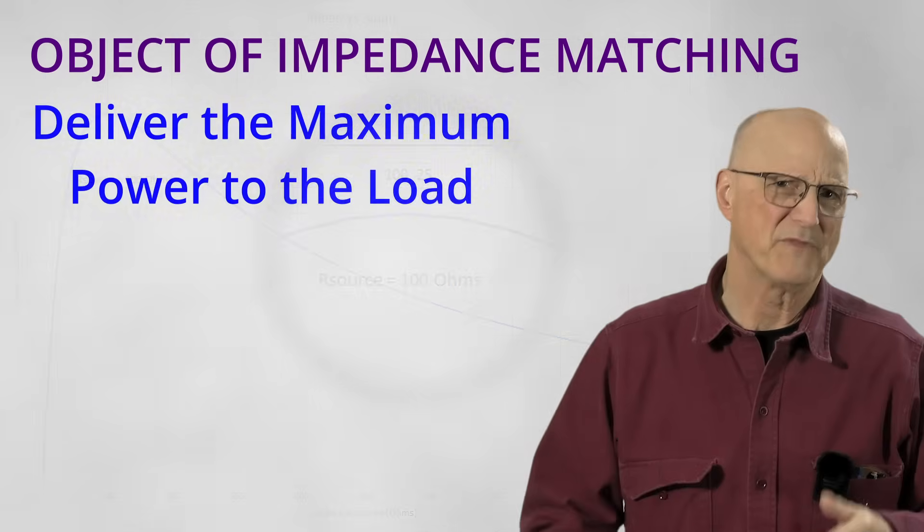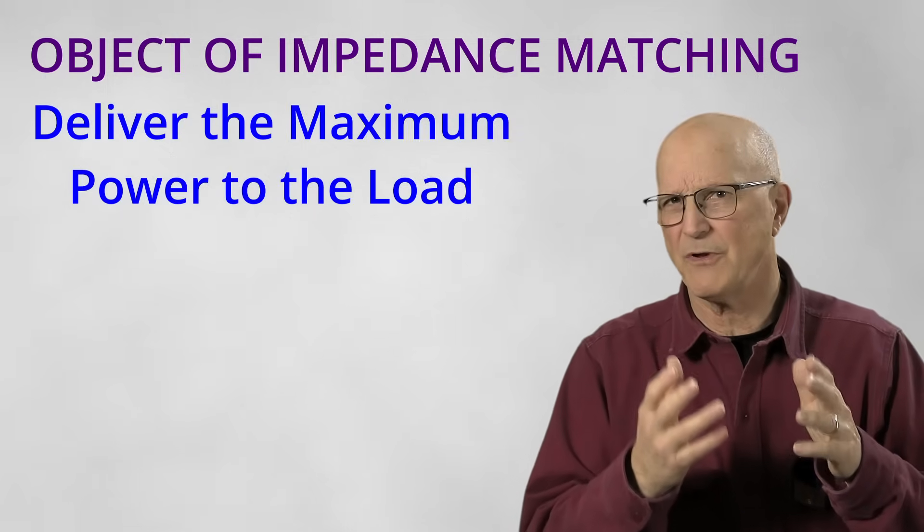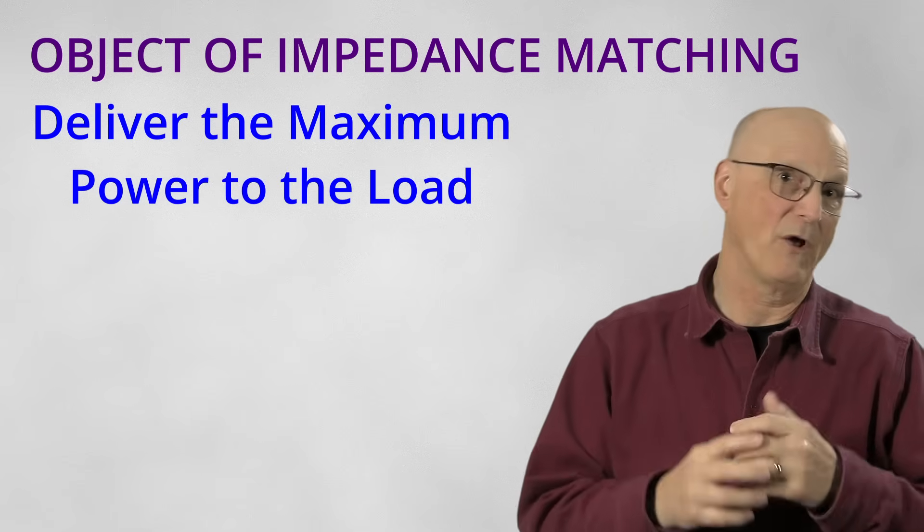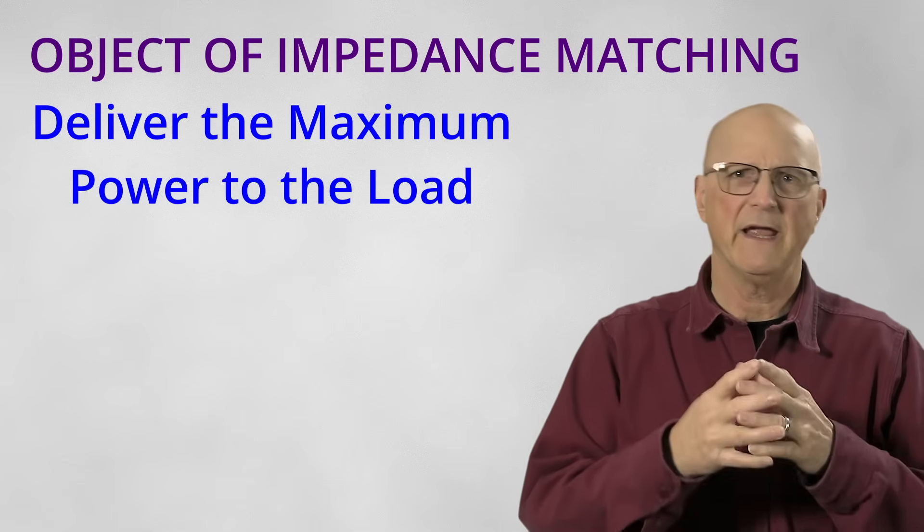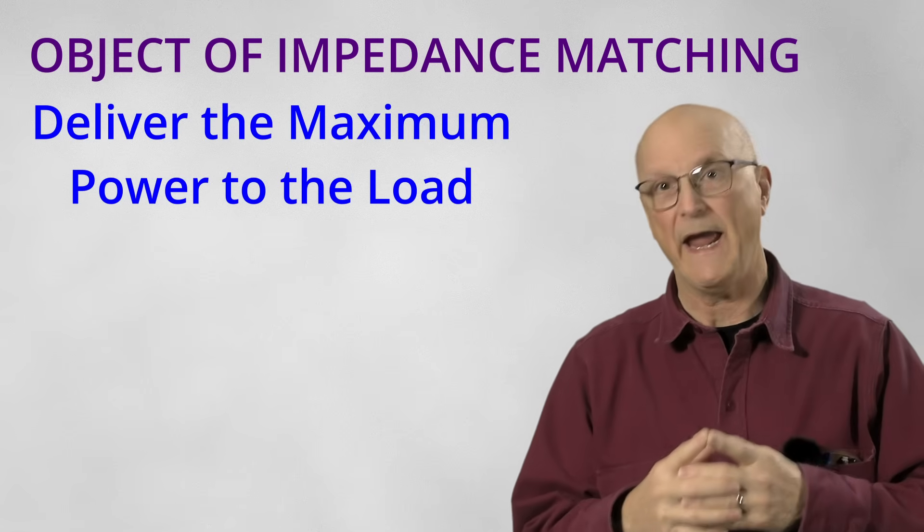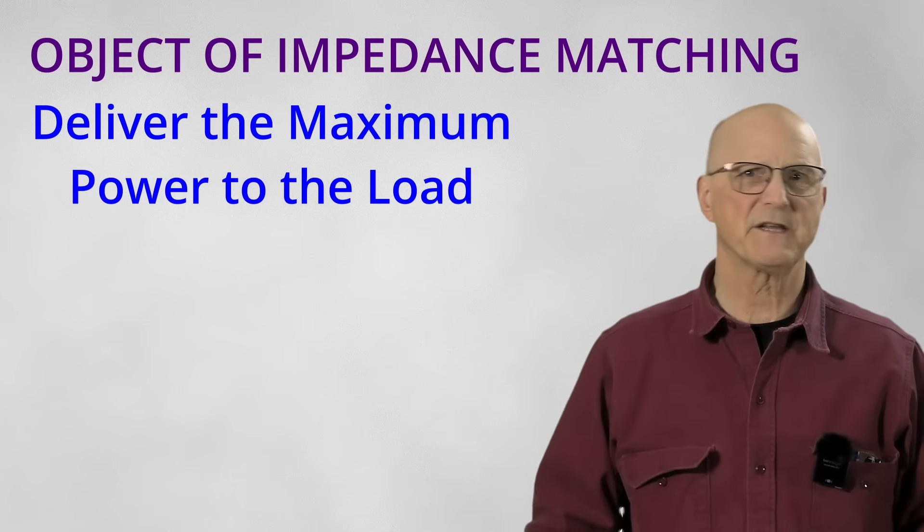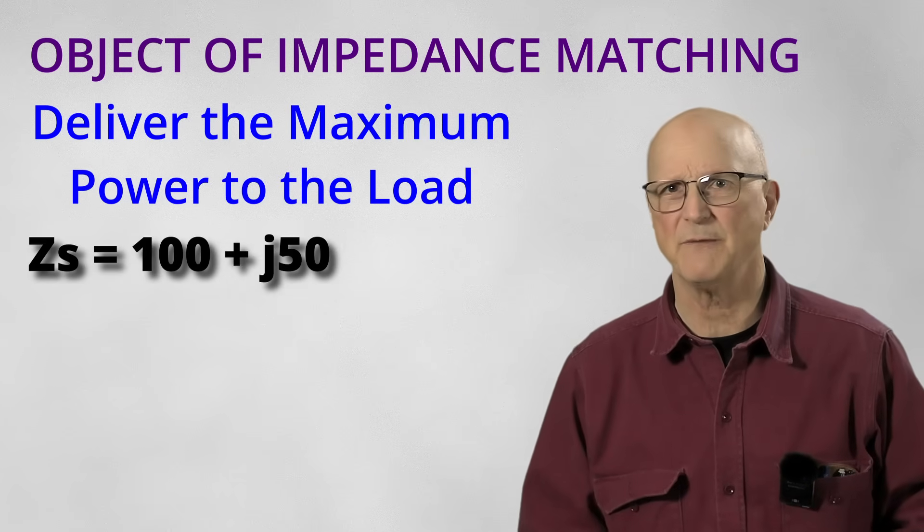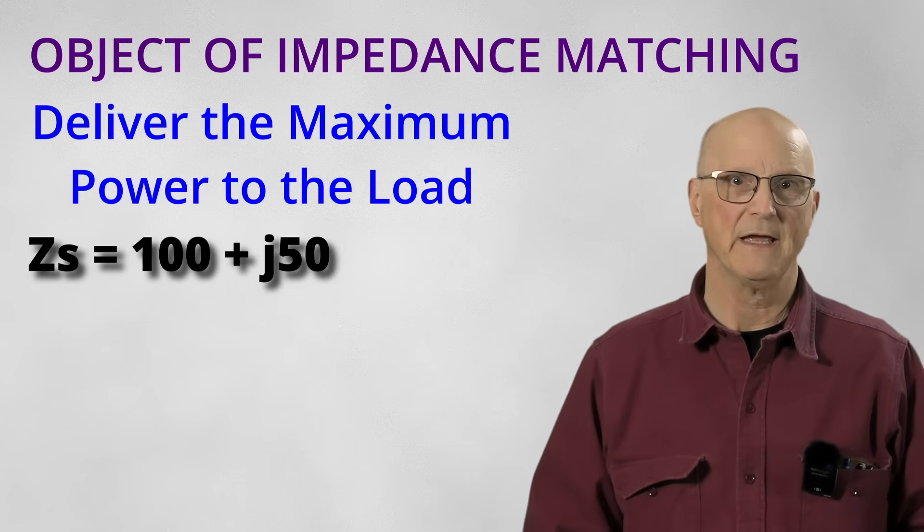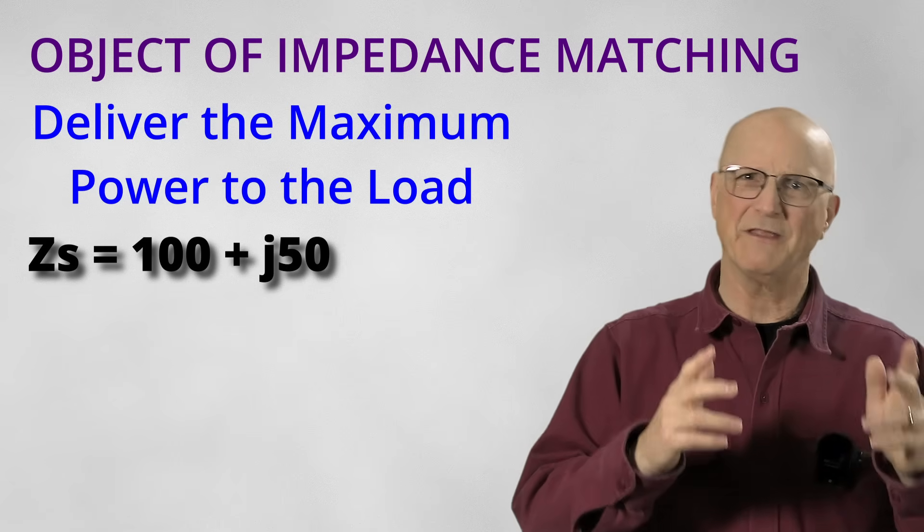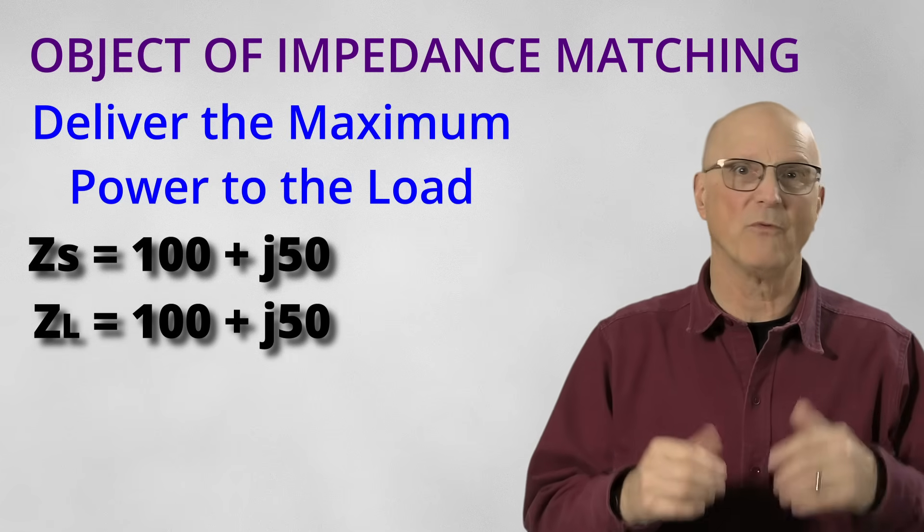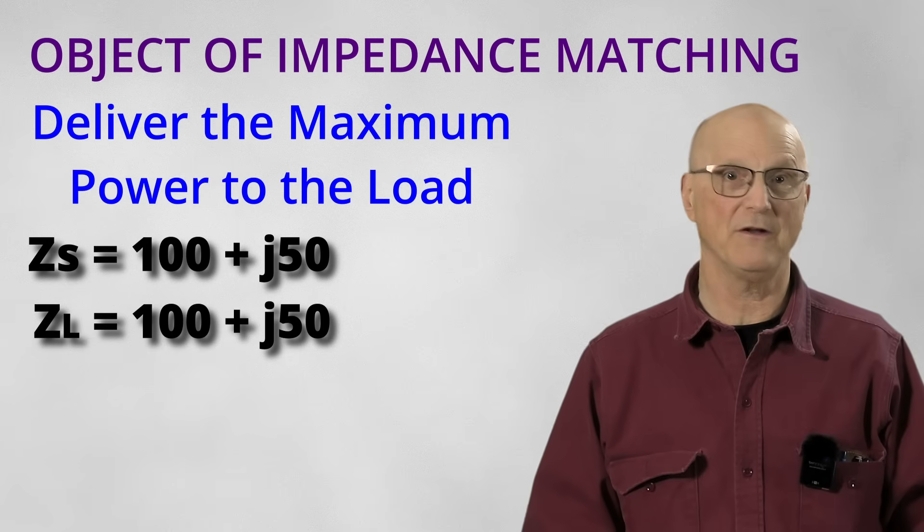Now this leads us to think that the same thing applies when we're talking about complex source and load impedances. A complex impedance includes both resistive and reactive elements. So let's consider an example where our source impedance is equal to 100 plus J50. We might think that the best possible power transfer is to be had with a load impedance of 100 plus J50 also.